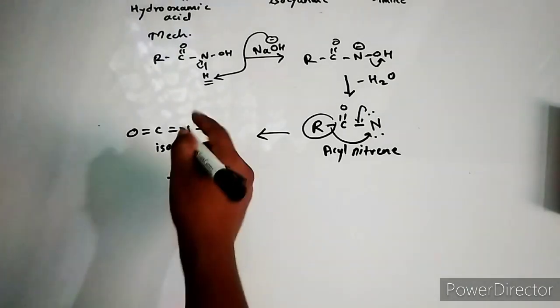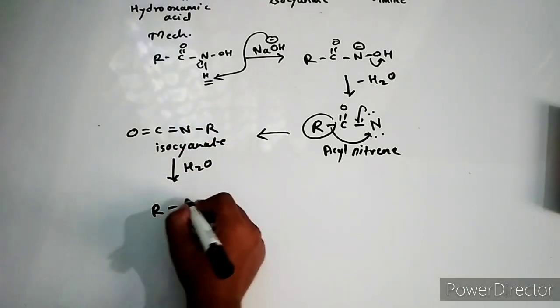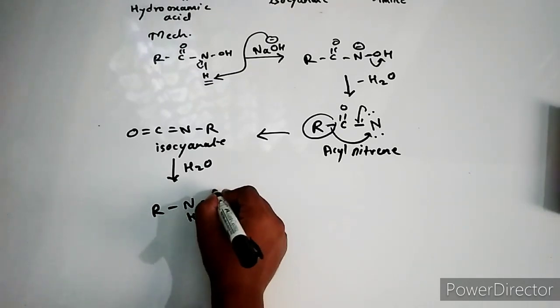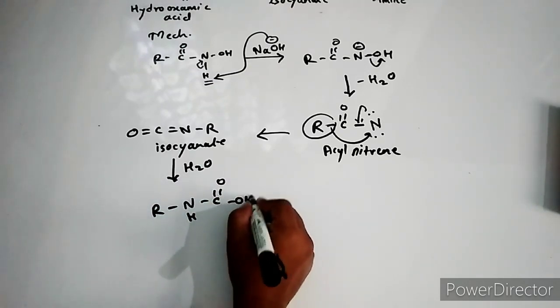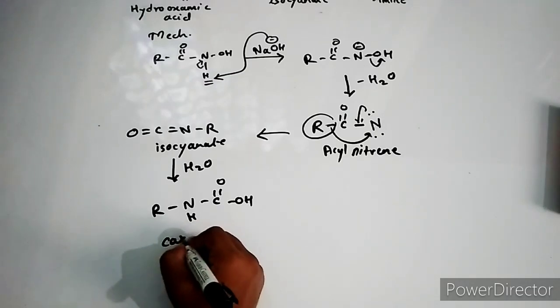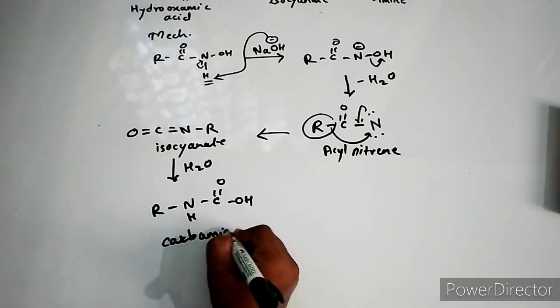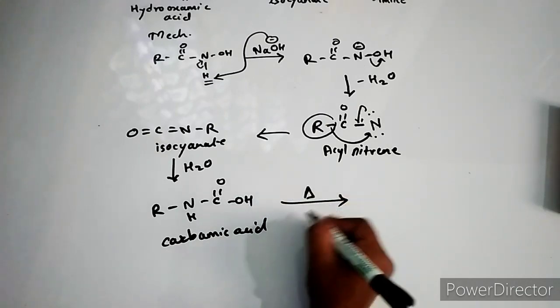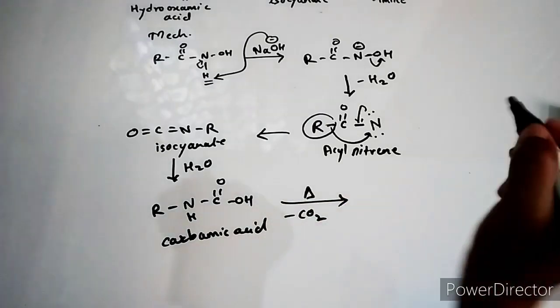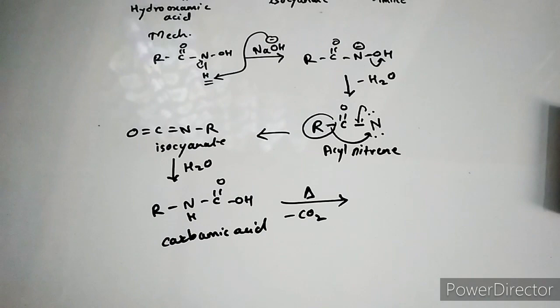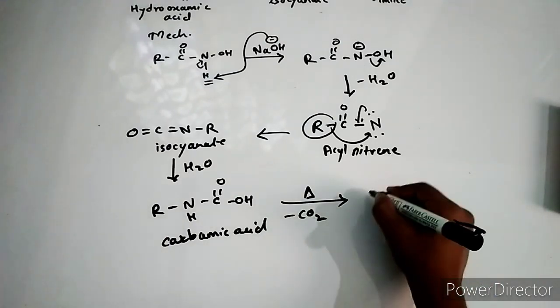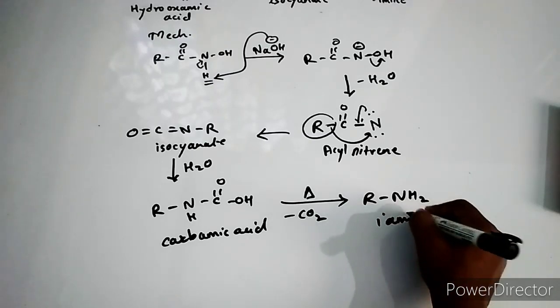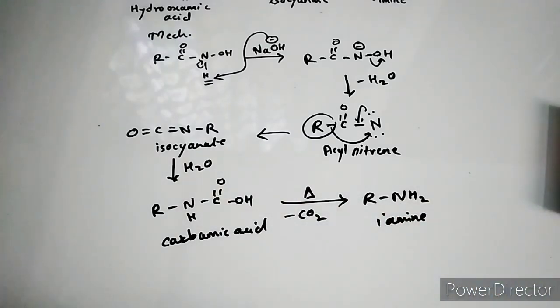This we call as carbamic acid. And this carbamic acid, when subjected to heat, it decarboxylates, that means CO2 carbon dioxide is leaving off, and it's giving you R-NH2 primary amine. So this is a very much simple and basic mechanism of this reaction.